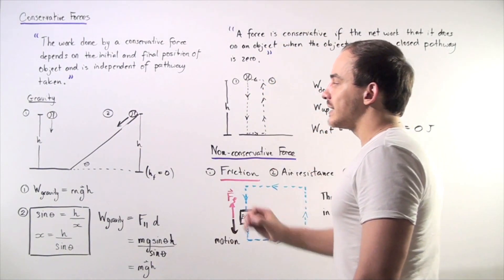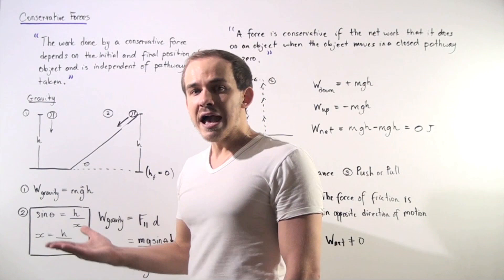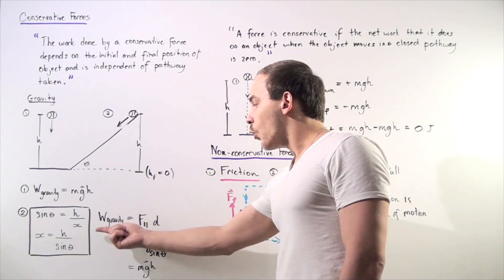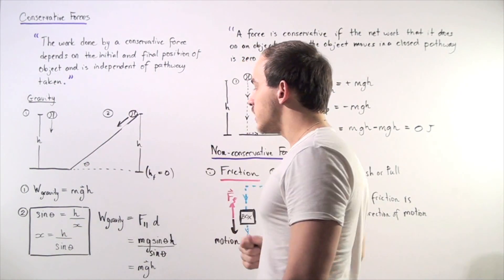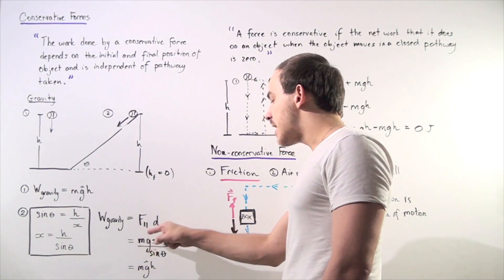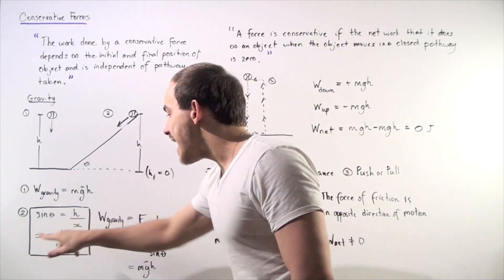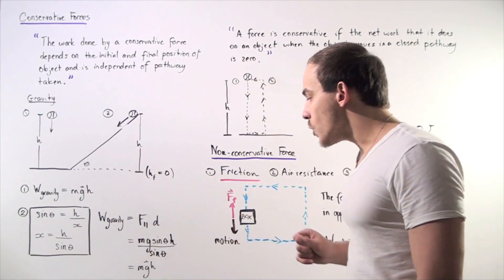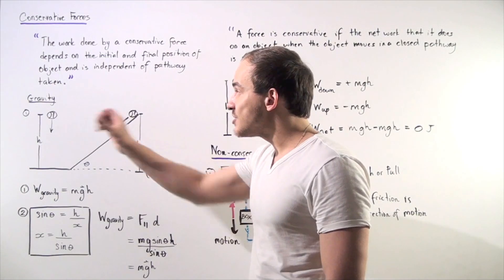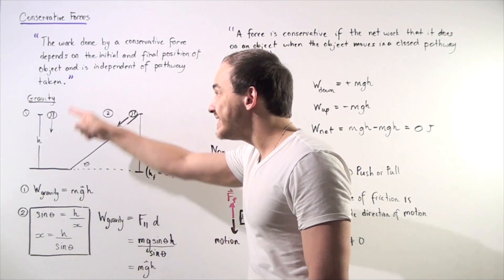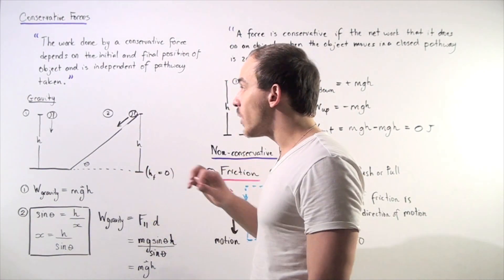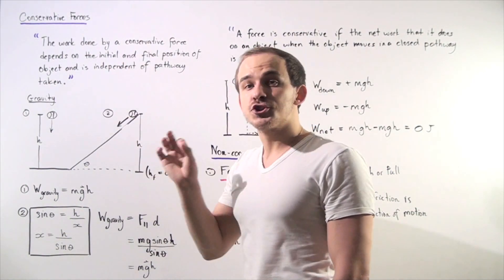The force acting along the inclined plane is not m times g, but m times g times sine theta. So the work done by gravity along the inclined plane is m times g times sine theta, multiplied by x, which is h divided by sine theta. The sine thetas cancel, and we're left with m times g times h. Notice that in case one and case two, our pathways differ but our initial and final positions are identical, and since the work is also identical, the force of gravity must be conservative.